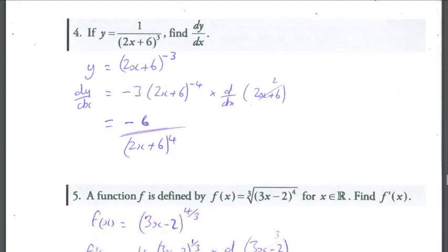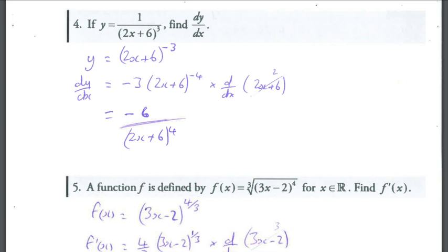Example number 4, similar to example number 3. We cannot differentiate with the x term in the denominator on the bottom of the fraction, so rewrite that as y equals bracket to the power negative 3. Then just do our steps. Power to the front, reduce the power by 1, so it'll be negative 3 bracket to the negative 4 multiplied by the derivative of the bracket. If I differentiate 2x plus 6, I get 2.